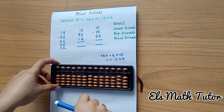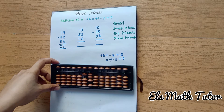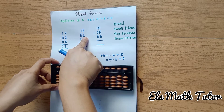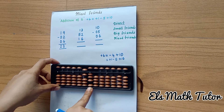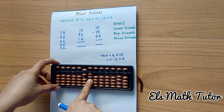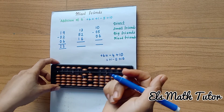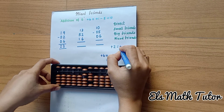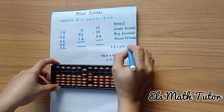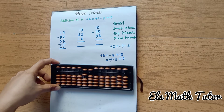Now go to the second sum. Add thirty — here ten, here three. Then fifty-two: in the tens place add fifty, and in the ones place we should add two beads. But I can't add two directly, so we use the small friends formula. What is the plus two formula? Plus two formula is plus five minus three. So plus five, minus three.